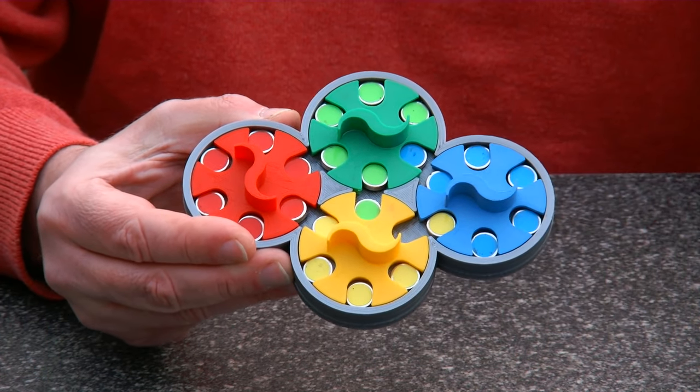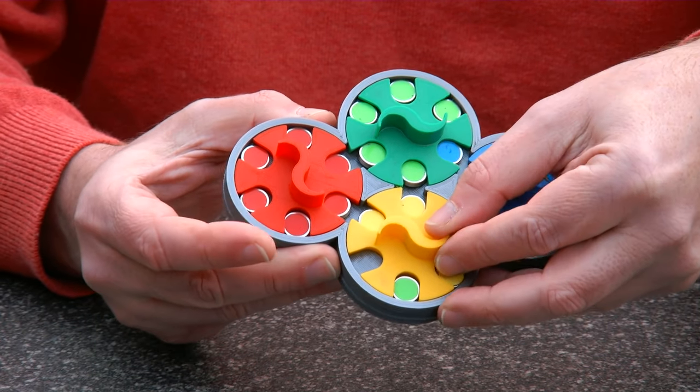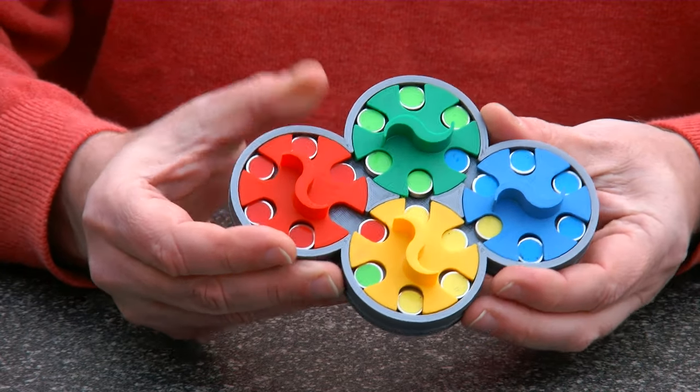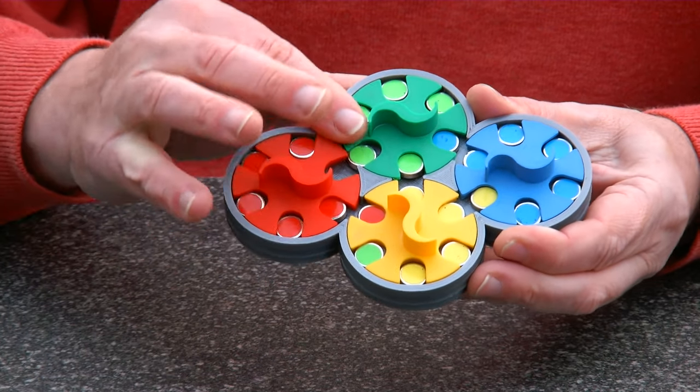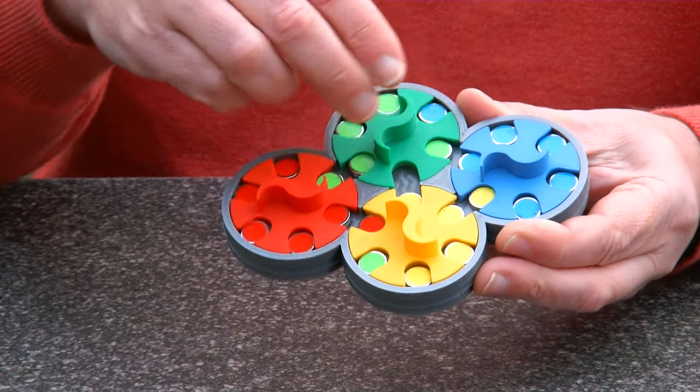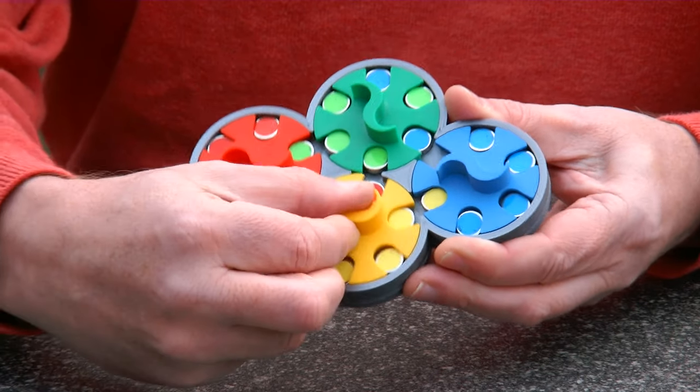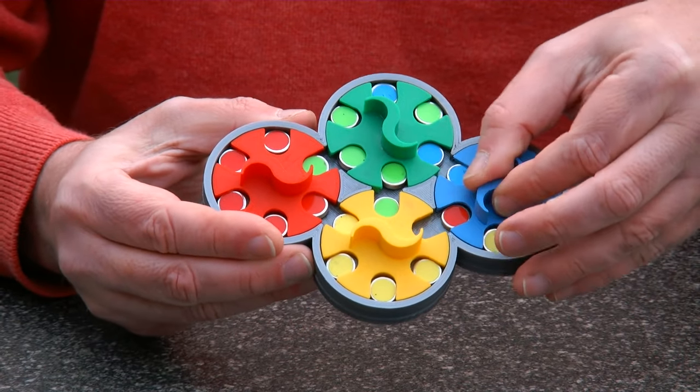And if I turn like this we get a yellow one in there. And now we see the red one move in here. And you see that this way it's very easy to scramble the puzzle and to get pieces moved around.